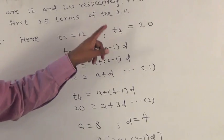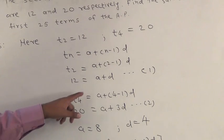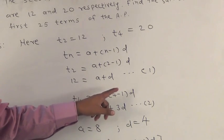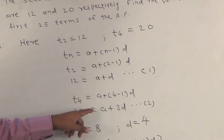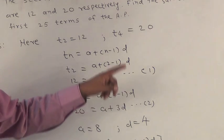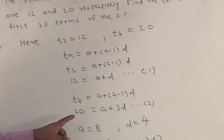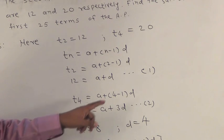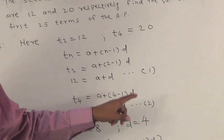Similarly, substituting the value of T4, we get T4 is equal to A plus 4 minus 1 into D, so 20 is equal to A plus 3D. Solving these two equations, we get value of A is equal to 8 and value of D is equal to 4.